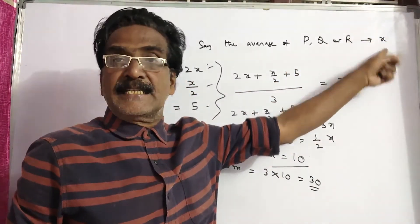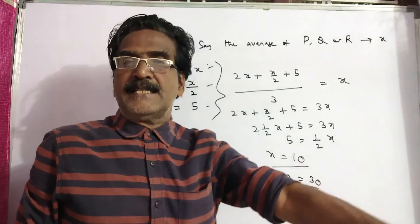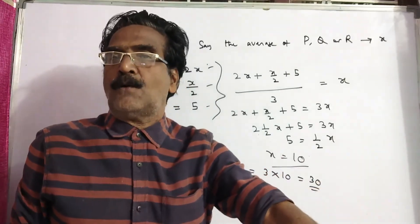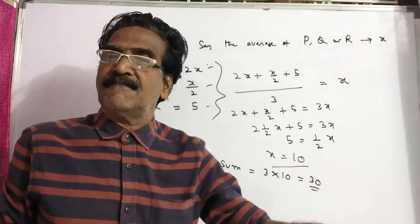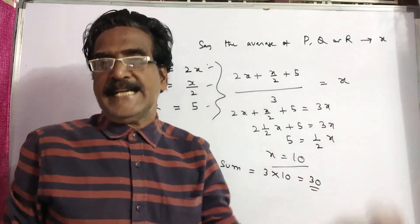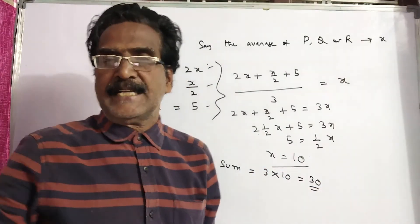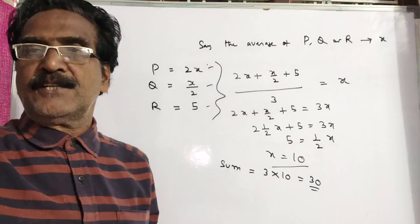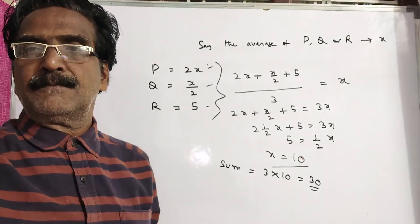Here, X is the average age of P, Q, R. Then the sum will be 3X. Thank you, friends. Have a nice day.